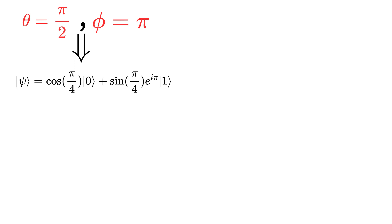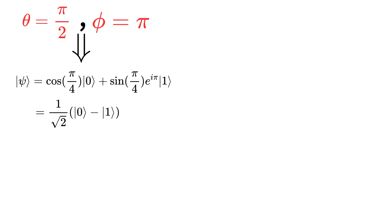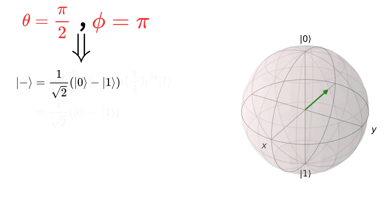If theta equals pi over 2 and phi equals pi, we have cosine of pi over 4 times ket 0 plus sine of pi over 4 times e to the i*pi times ket 1. Cosine and sine of pi over 4 are both 1 over square root of 2, and e to the i*pi equals minus 1. So we get the superposition 1 over square root of 2 times (ket 0 minus ket 1), which is the minus state.